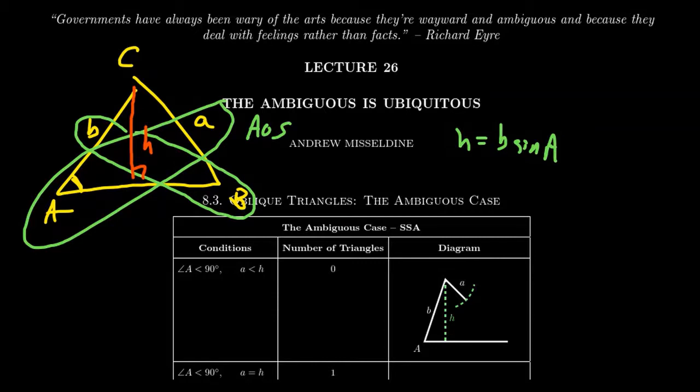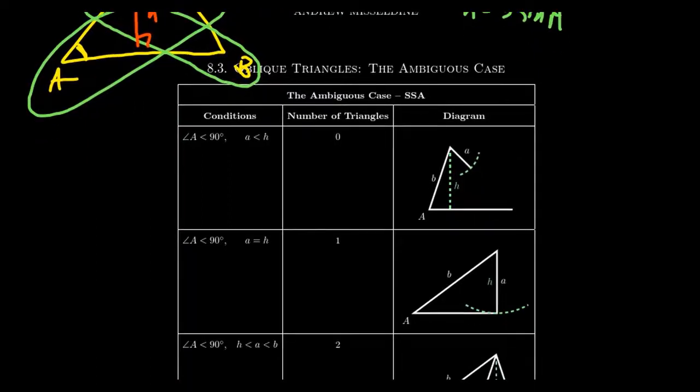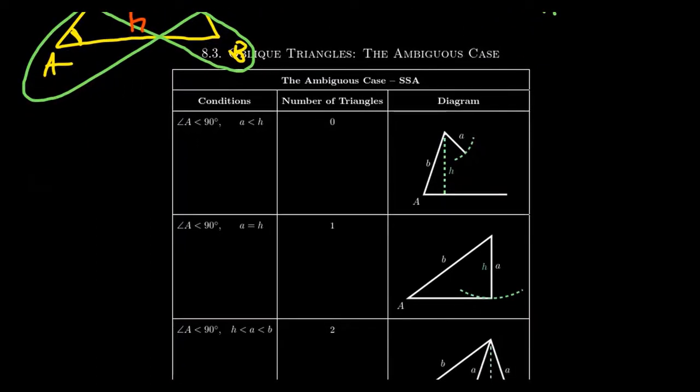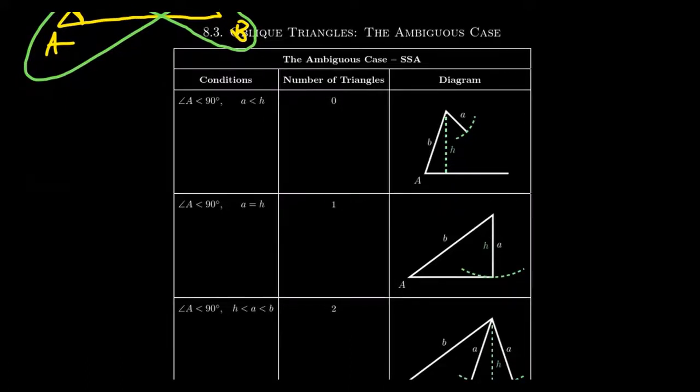The ambiguous case can have no solution, one solution, or multiple solutions. That's what really makes it ambiguous. You can solve the ambiguous case using the Law of Cosines or the Law of Sines, but the Law of Sines is typically simpler.